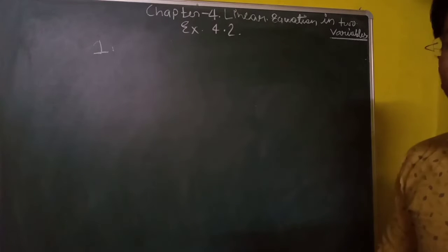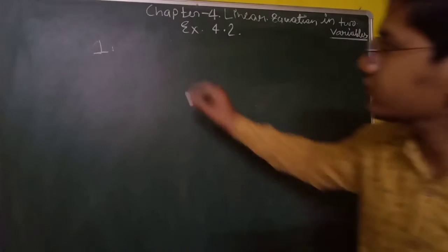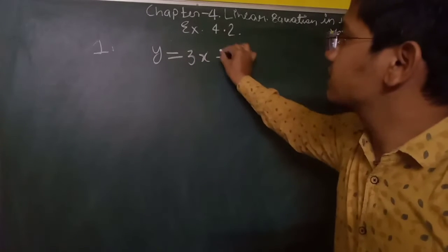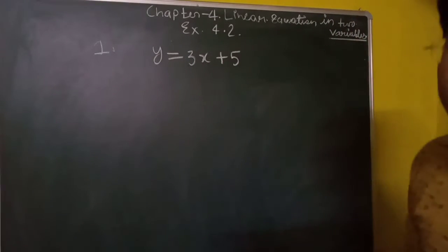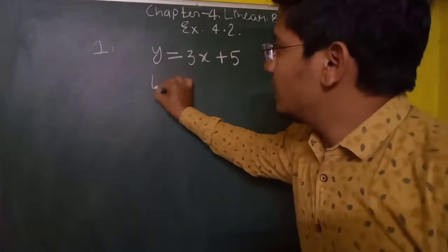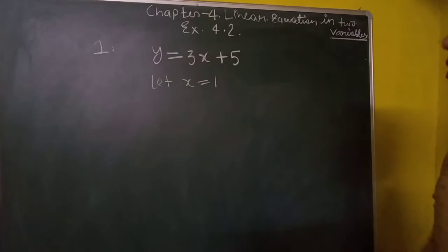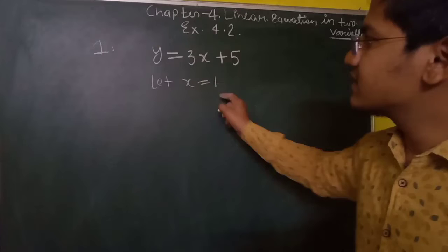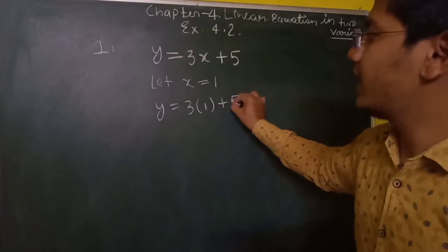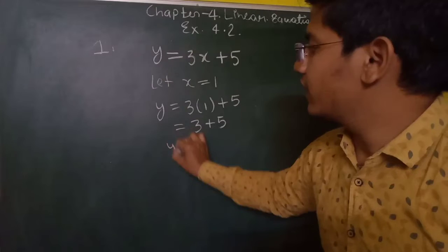So our first question of this exercise is: which of the following options is true and why? We are having y equals to 3x plus 5. We will understand what is the meaning of the term solution. If we take x equal to 1, we will get the value of y. So let x equal to 1, so y is equal to 3 into 1 plus 5, that is 3 plus 5, which equals 8.